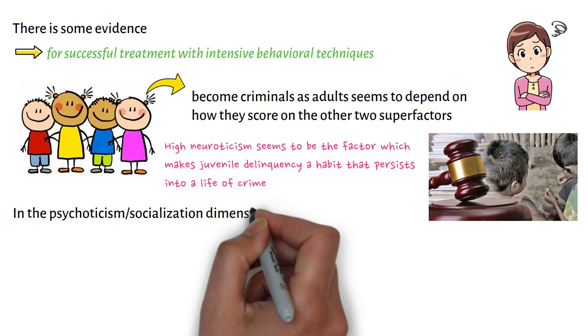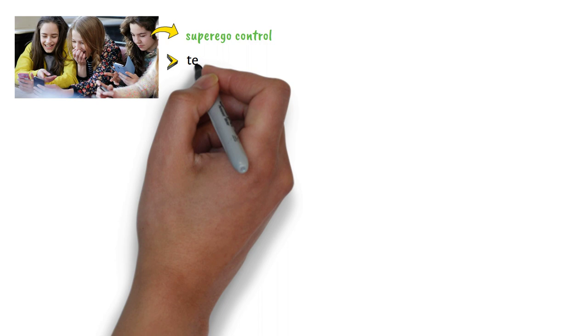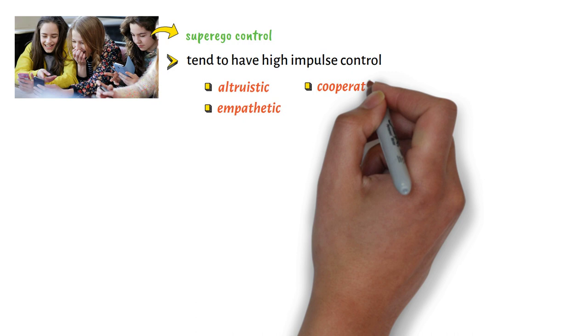In the psychoticism-socialization dimension, people who are high on psychoticism tend to be independent thinkers, cold, non-conformist, impulsive, antisocial, and hostile. People who are high on socialization, often referred to as superego control, tend to have high impulse control — they are more altruistic, empathetic, cooperative, and conventional.